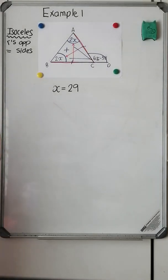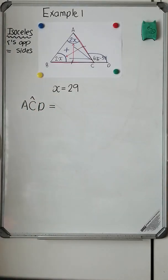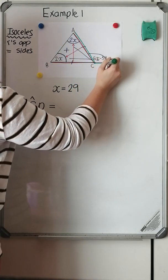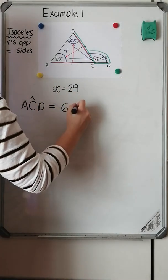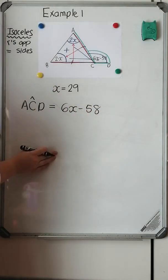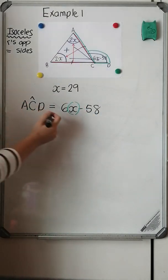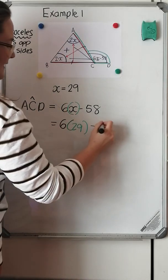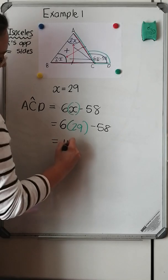As an extension, if x equals 29, would you know how to find how big angle ACD is? Angle ACD is 6x minus 58. They're asking me to substitute x into this expression. So I have 6 times 29 minus 58, which gives me an answer of 116 degrees.